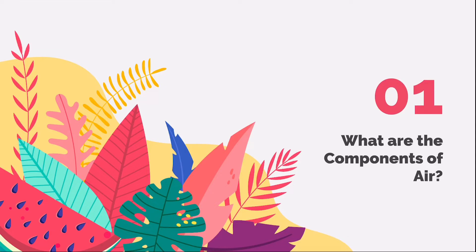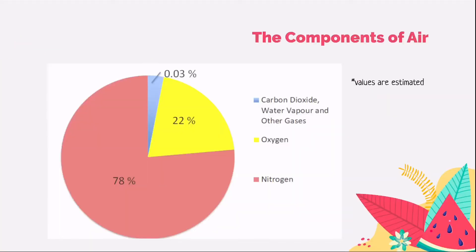What are the components of air? As shown in this pie chart, the air contains about 78% nitrogen, about 22% oxygen, and about 0.03% carbon dioxide, water vapor, and other gases. Note that it is wrong to think that the air comprises mainly of oxygen gas only.